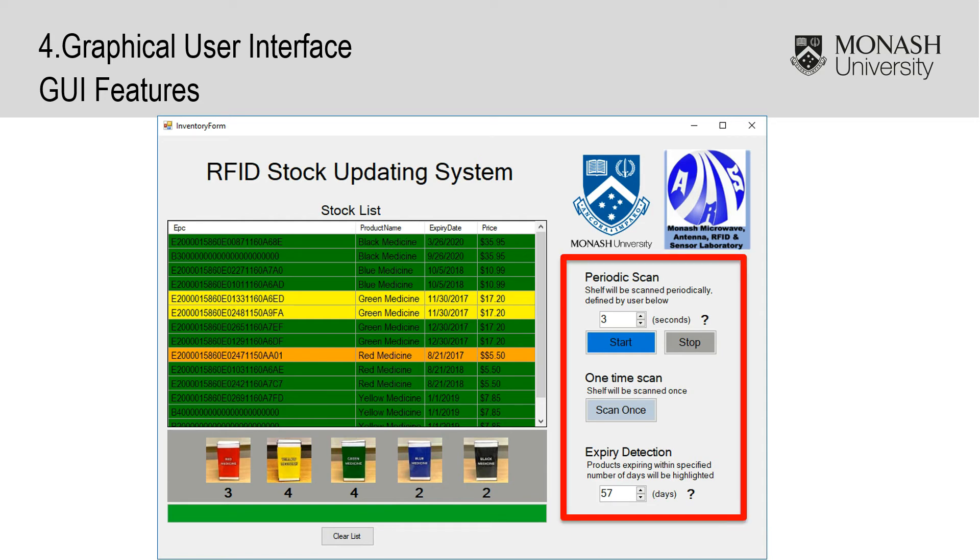The first main component of the GUI is the user controls. Users are able to start a single scan operation, periodic scan operation, as well as using the early expiry detection feature. In a single scan, the shelf is only scanned once. Starting the periodic scan essentially repeats a single scan periodically and allows for automation.